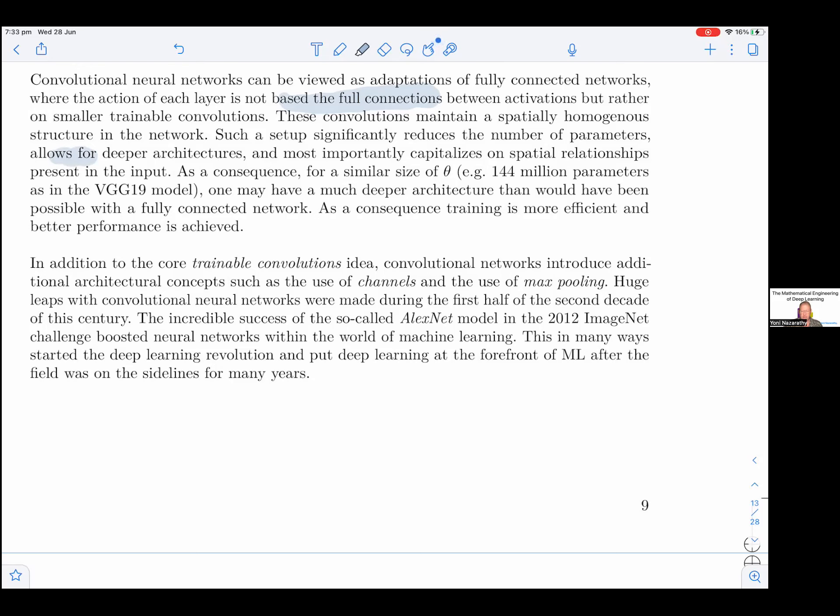As a consequence, for a similar size of theta, for example 144 million parameters as in the VGG19 model, one may have a much deeper architecture than would have been possible with a fully connected network. As a consequence, training is more efficient and better performance is achieved.